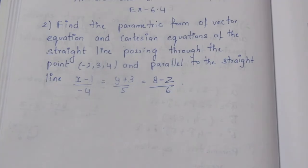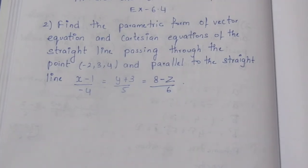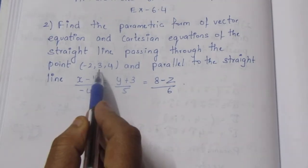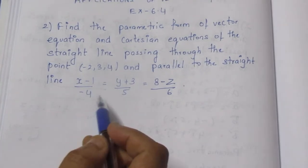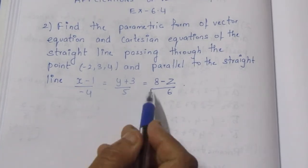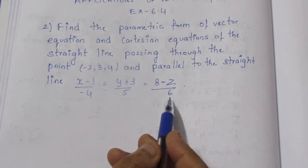Find the parametric form of vector equation and Cartesian equations of the straight line passing through the point (-2, 3, 4) and parallel to the straight line (x-1)/(-4) = (y+3)/5 = (8-z)/6.